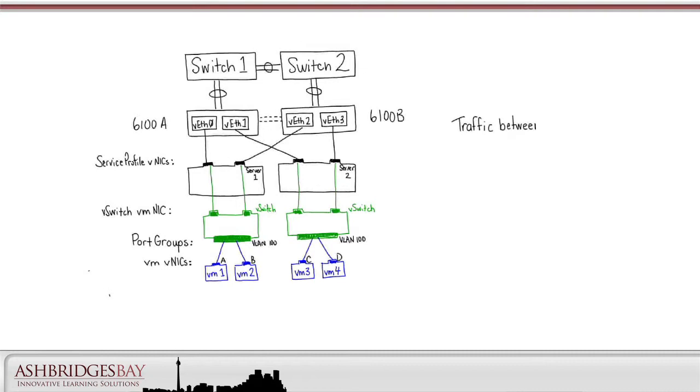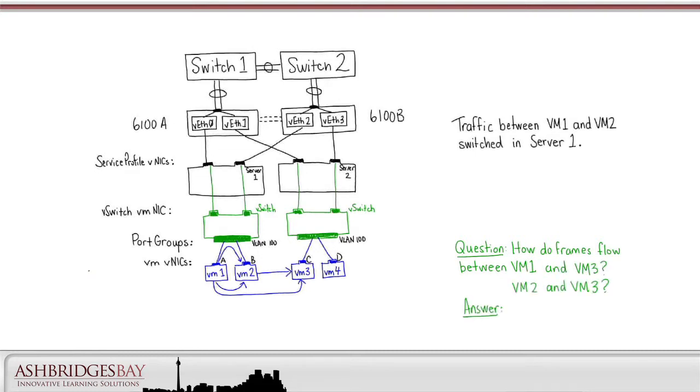Traffic between VM1 and VM2 will be switched on server 1. How do frames flow between VM1 and VM3? Between VM2 and VM3? It depends on the NIC teaming policy. To understand how traffic flows, we need to know the NIC teaming configuration.